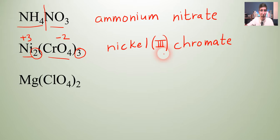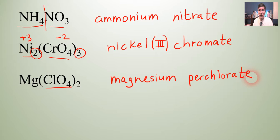For the next example, Mg. Hopefully you realize that that's magnesium. So it's magnesium. And then we have ClO4, which is perchlorate. So it's magnesium perchlorate on that one.